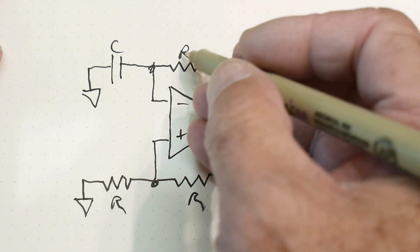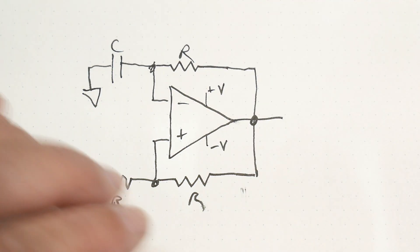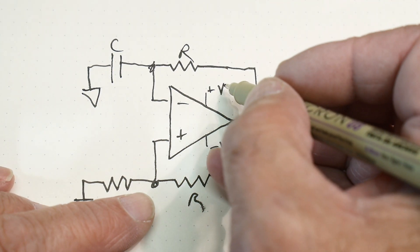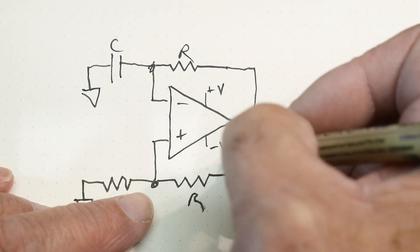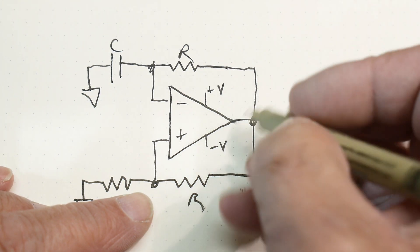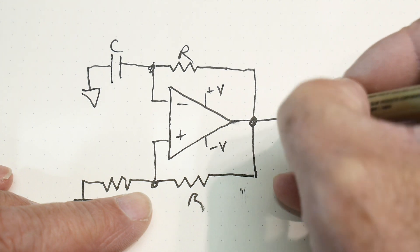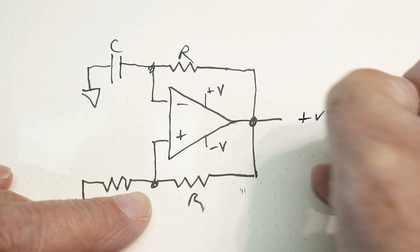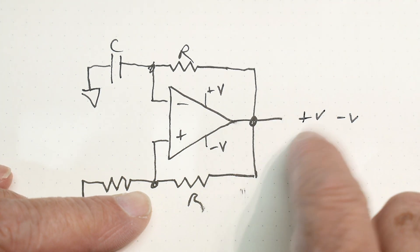These R's are all the same value, R, R, R. We have an op amp that runs off a plus or minus V. And so what's the output? Well, the output can be plus V or it could be minus V. It can be somewhere in that range.